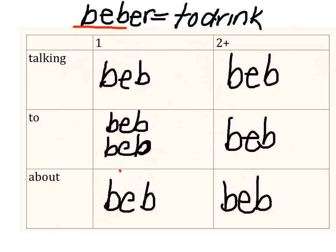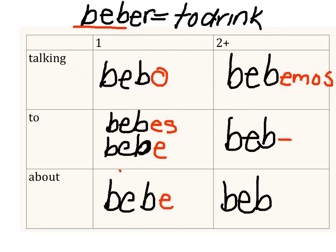So let's look at the endings. The yo form is 'bebo.' The tú form is 'bebes.' The usted form is 'bebe.' The él and ella form is 'bebe.' The nosotros form is 'bebemos.' The ustedes form is 'beben,' and the ellos form is also 'beben.' So you need to remember: O, ES, E, E, EMOS, EN, EN. And whenever you see any verb that ends in ER, you can treat it the same way.